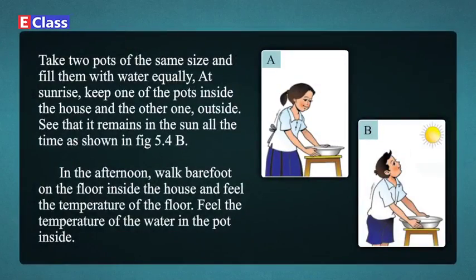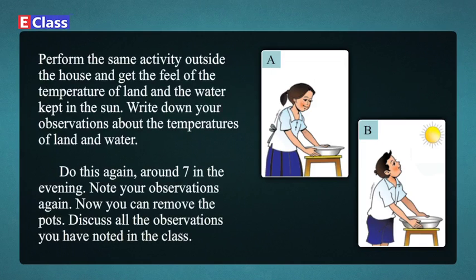Do It Yourself: Let us perform an experiment to see the difference in the heating and cooling of land and water. Take two pots of the same size and fill them with water equally. At sunrise, keep one pot inside the house and the other outside in the sun, as shown in figure 5.4B. In the afternoon, walk barefoot on the floor inside the house and feel the temperature. Also feel the temperature of the water in the pot inside. Perform the same activity outside and note the temperature of both land and water. Repeat observations around 7 in the evening.